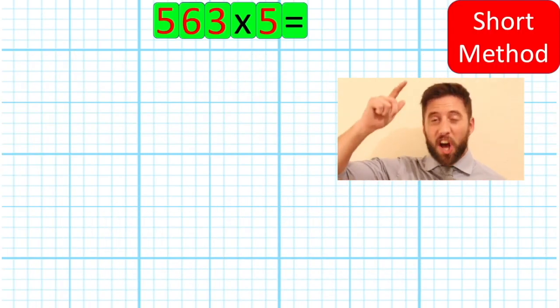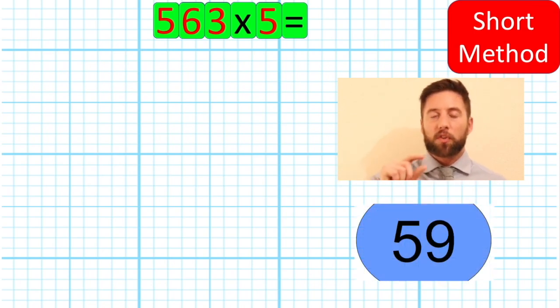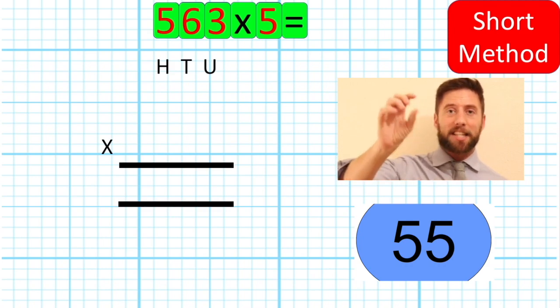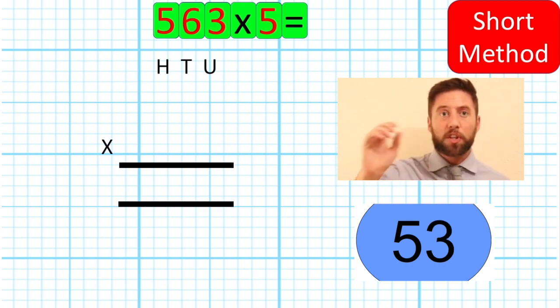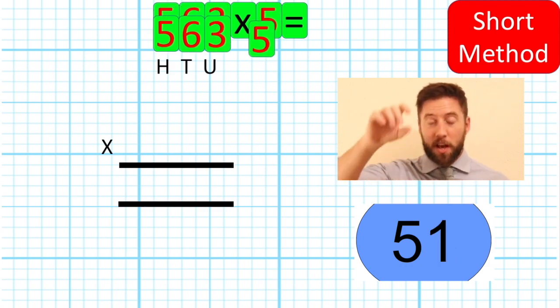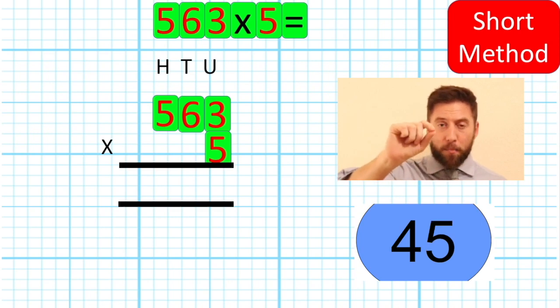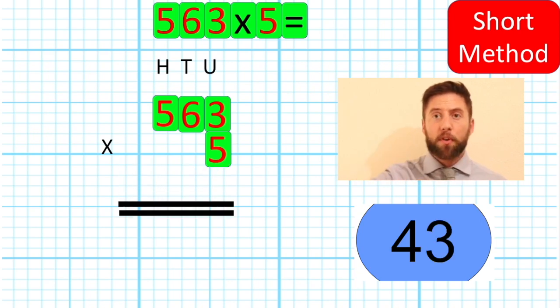Okay guys, 60 seconds start. Now we're looking at 563 times 5. Let's first of all get our column method set up neatly. Units, 10s and 100s. Bring our number down 563. Get our 5 in our units column. We are looking good. Remember my tip from my explainer video. Get the line. Bring it down so we've got that spare row. Beautiful. We are ready to go.